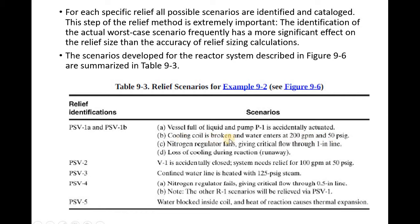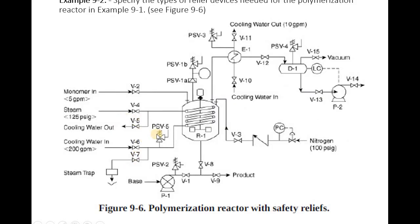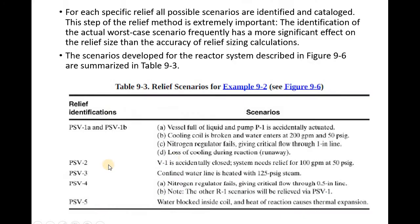Another scenario: the cooling coil is broken and water enters at a certain temperature, flow rate, and pressure. We have cooling water in and cooling water out. If the vessel is full of liquid and P1 is pumping, and the cooling coil is broken, and additionally nitrogen regulation fails - meaning no inerting - and there's loss of cooling during reaction leading to runaway, we have liquid accumulation and vapor buildup with no cooling, so PSV-1 will be working.